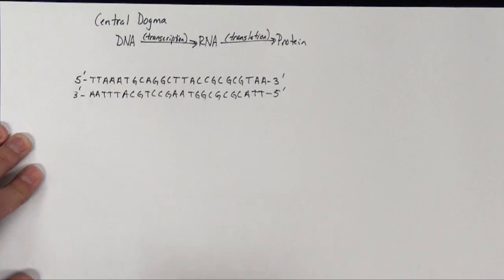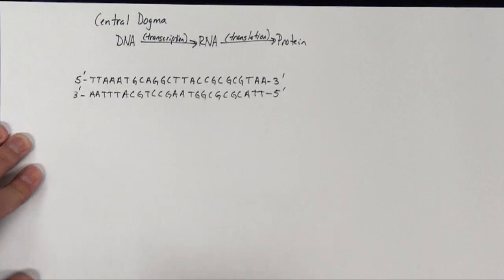This would be the 5' end and this is the 3' end. So here is our double-stranded molecule of DNA. And now what I want to do is actually convert this into RNA or use it as the code for RNA and then ultimately translate that RNA sequence into protein.